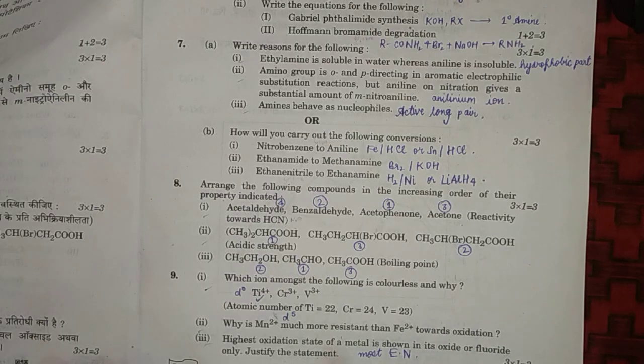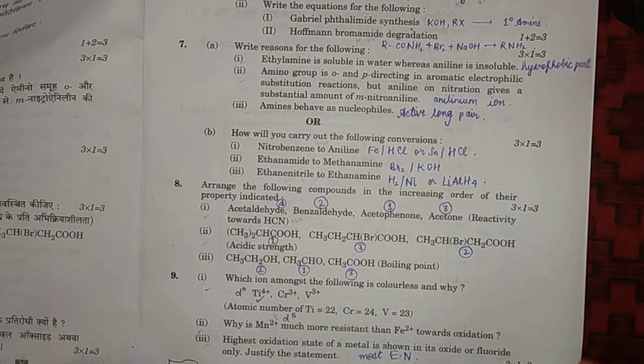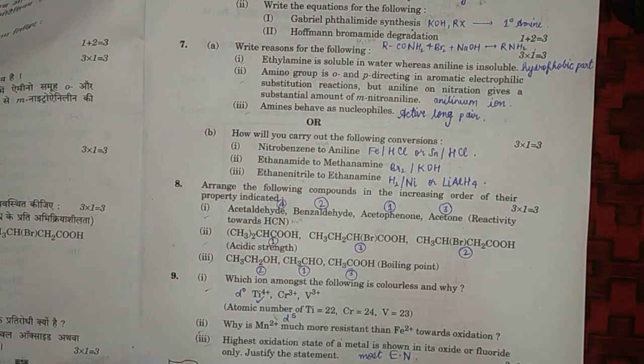Highest oxidation state of a metal is shown in its oxide or fluoride only, justify. Because oxide and fluoride are most electronegative. Moreover, oxide forms multiple bonding, that is p-pi d-pi bond, which makes it much more possible for multiple bond formation.